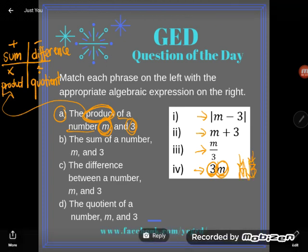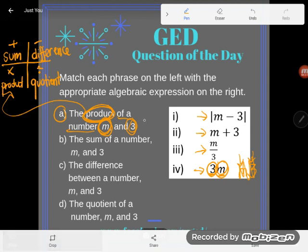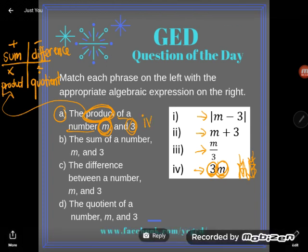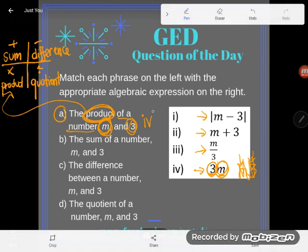So there it is, the product of a number m and 3. So number 1 is 4, or A, I should say, is 4.